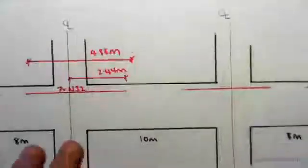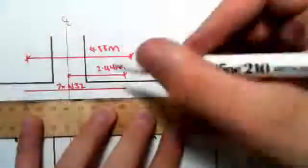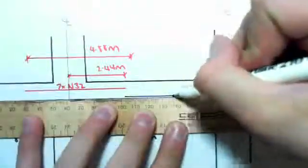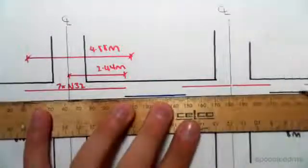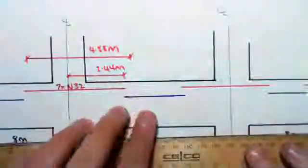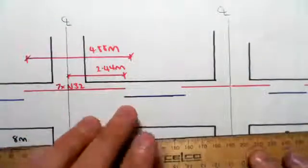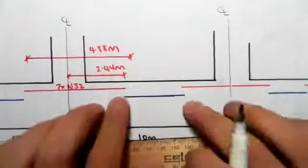So all we do is draw in the bar which is going to look something like that, and like that, and like that. But the code says we need to now splice them. Splicing means we extend the lengths either side to ensure that the force from this bar can be transferred into that bar.